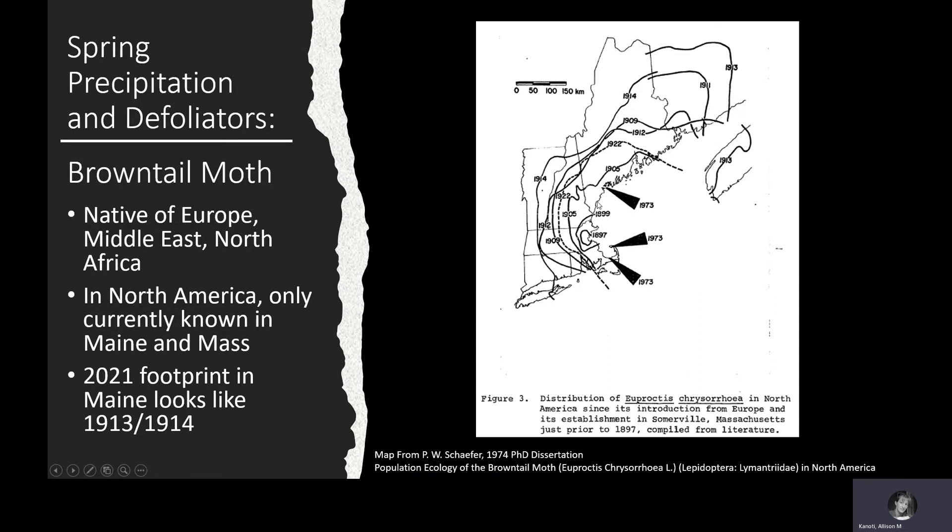We've recently found webs as far north as Fort Fairfield in northern Aroostook County and in western Oxford County in the town of Bethel. So the footprint of the moth in Maine is similar to what it was at the peak of its distribution in the early 1900s.